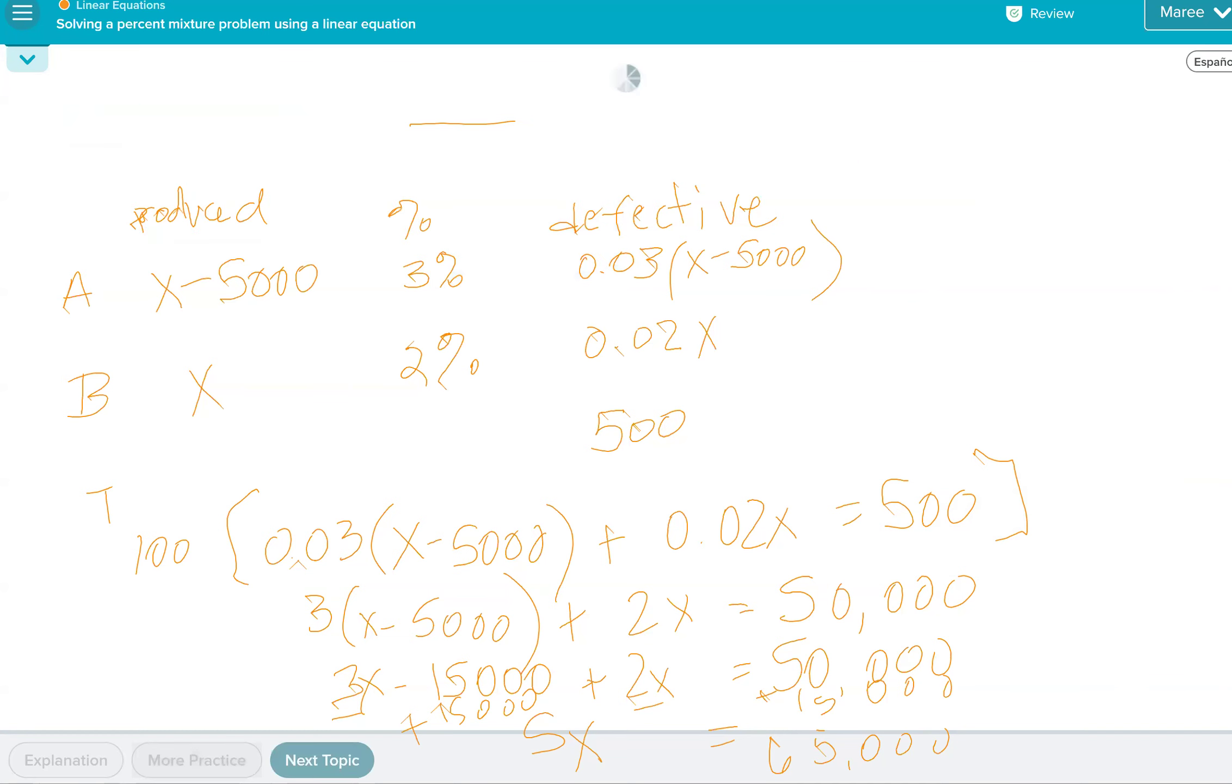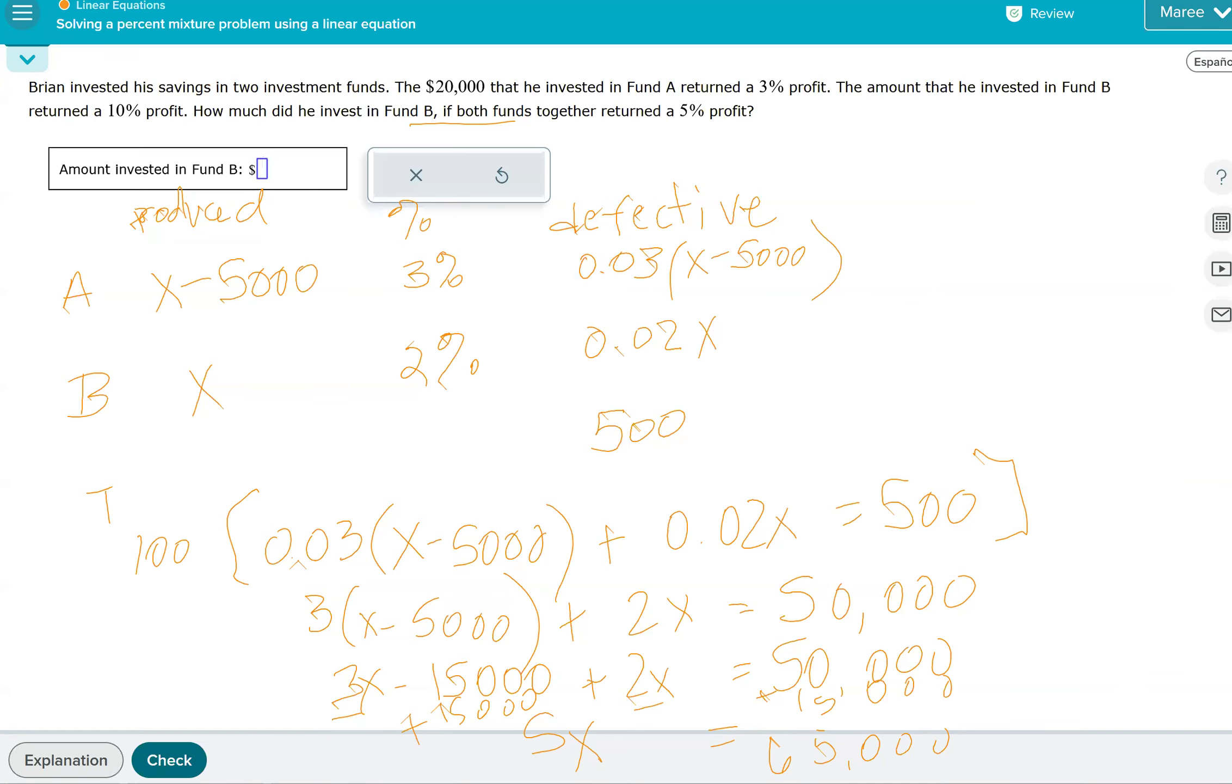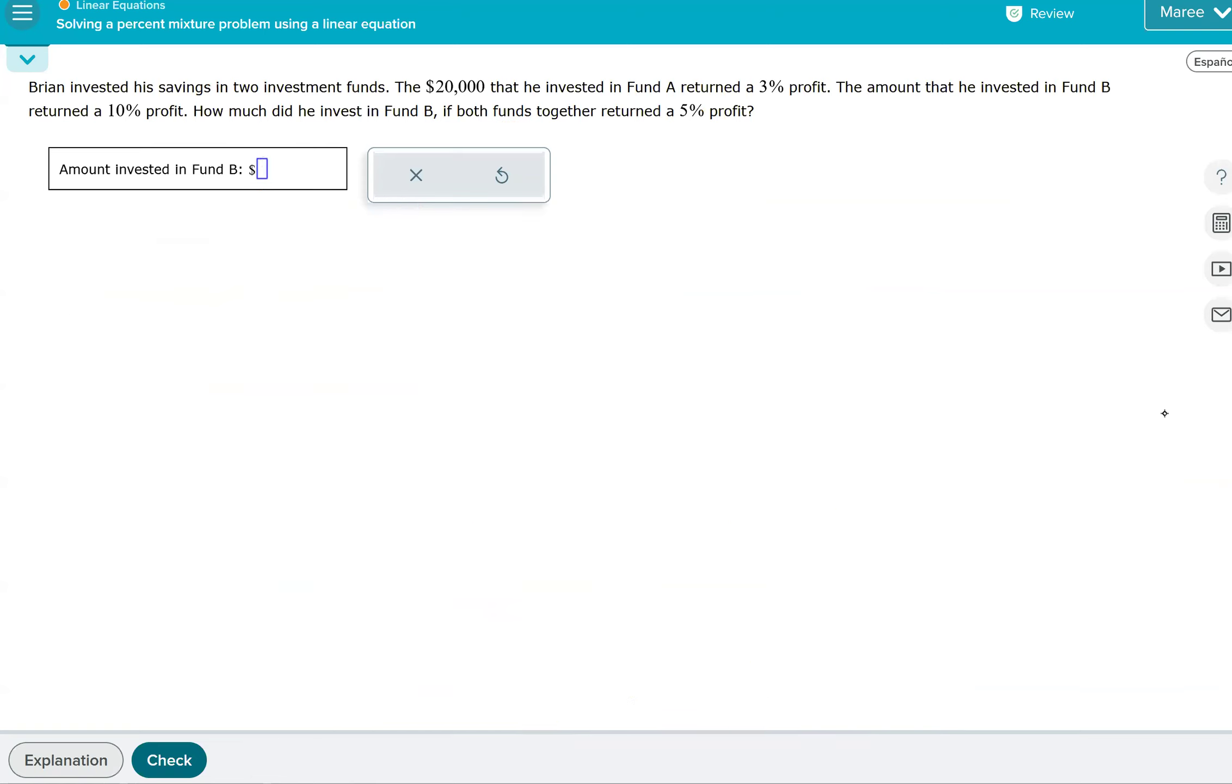Okay, so let's try another one. We just want to make sure that we're setting up our table correctly. So Brian invested his savings into two investment funds. The $20,000 that he invested in fund A returned a 3% profit. The amount that he invested in fund B returned a 10% profit. How much did he invest in fund B if both funds together returned a 5% profit?